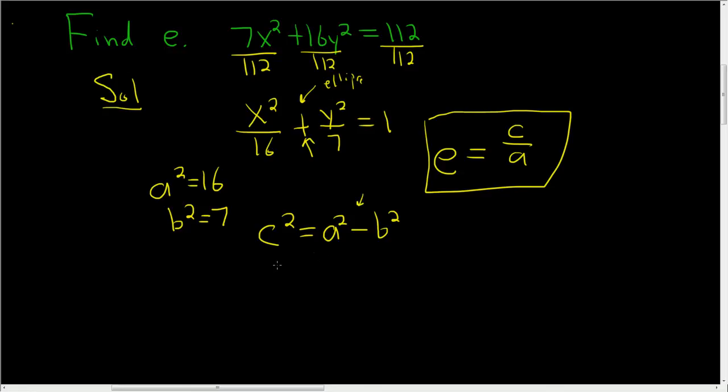Okay, so c squared is, let's see, a squared is 16, b squared is 7, so you get 9. So c here will be 3, and a squared is 16, so a is 4.